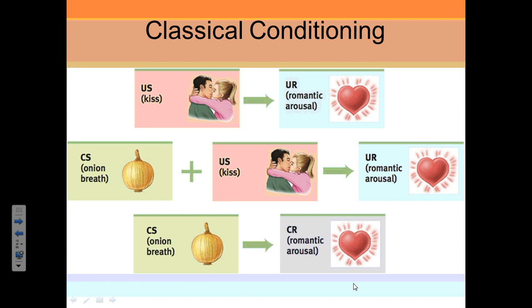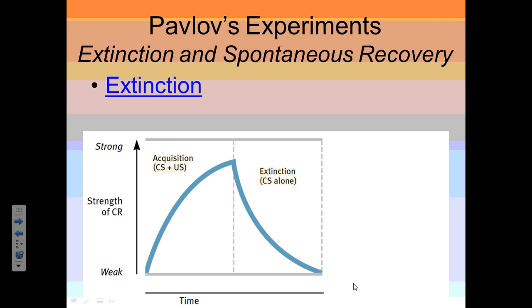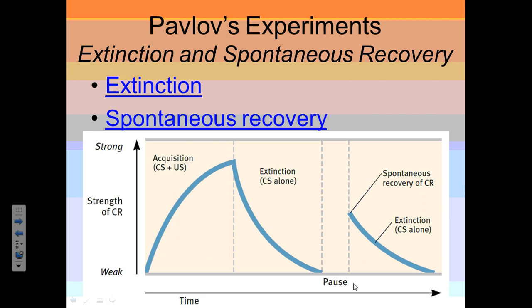Now let's cover some concepts that go along with classical conditioning. First is extinction. Going back to Pavlov's dogs — if we ring that tuning fork repeatedly but present no food, the response becomes extinct and the dog no longer salivates at the sound. Spontaneous recovery is when that conditioned response comes back after a period of extinction — years later, the dog might slightly salivate when it hears the tuning fork, remembering when food used to follow.